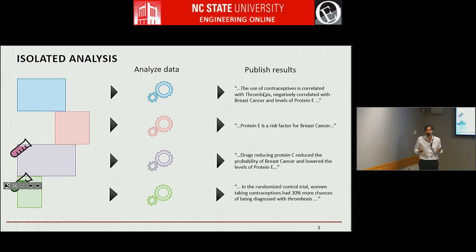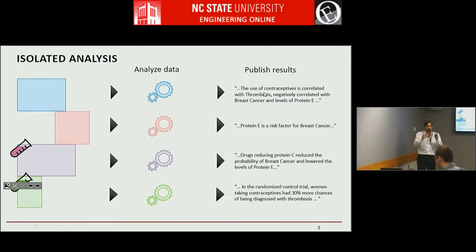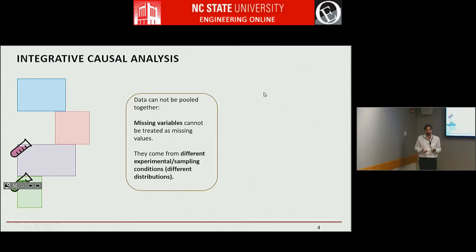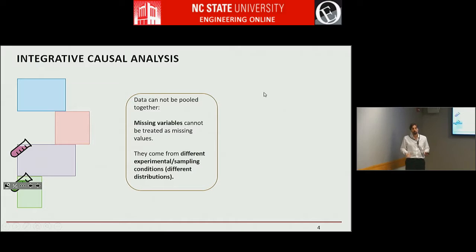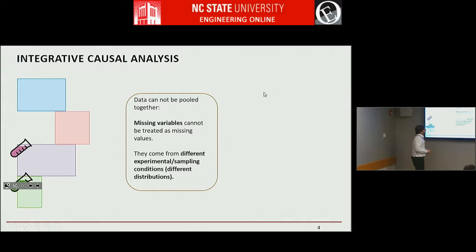The question is: can we have automated smart algorithms that figure out what is happening, not by synthesizing the text, but by analyzing the raw data? If you try to pull all the data together, you cannot do this naively because the data come from different distributions. For one thing, you have missing variables, and there are theorems that these missing variables you cannot impute without making additional assumptions.